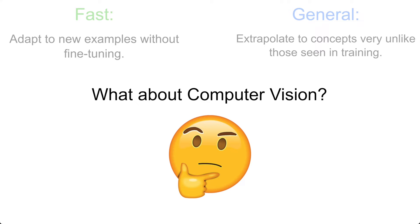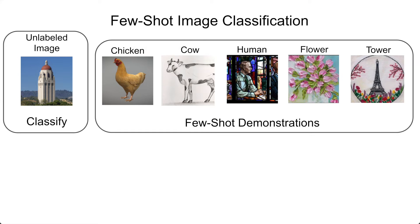But what about computer vision? What is the analog of large language models in computer vision — this notion of being both fast and extremely general? Few-shot image classification actually has an incredibly rich history spanning the last three decades. We want to use very few labeled images to classify an unlabeled image, so a model trained on the images shown will learn to identify the object within an image to classify unlabeled images.